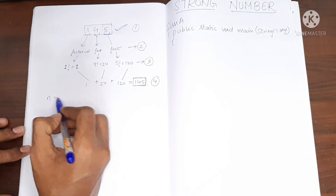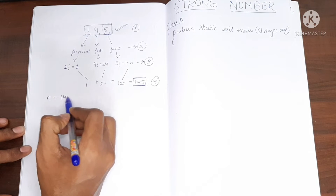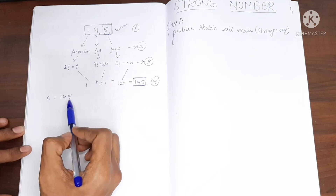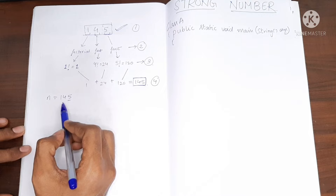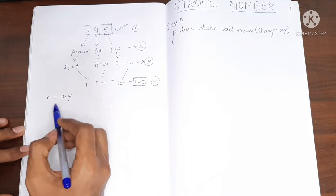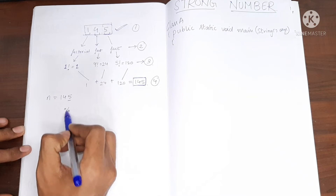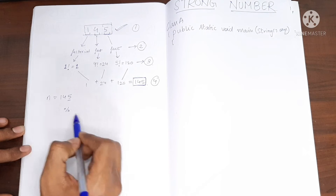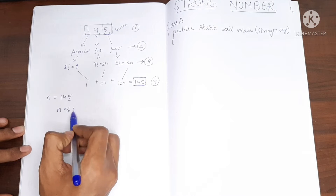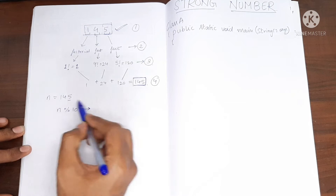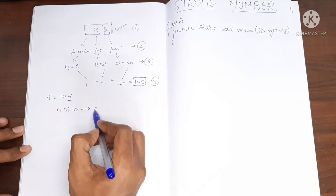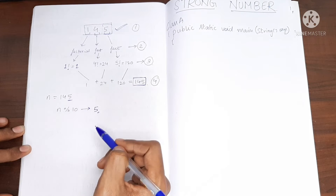Say n is 145. To take digits from any number, we use mod 10. If you do n mod 10, this gives you the last digit of the number — in this case, 5.